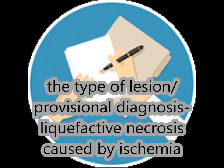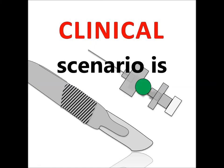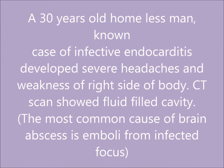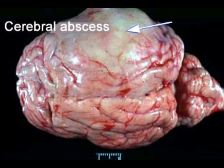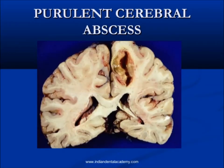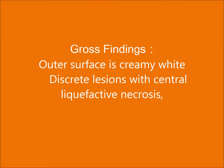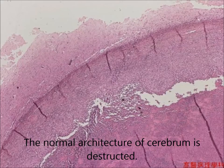Liquefactive necrosis is the loss of normal architecture, and this may also occur in fungal or bacterial infection. A 30-year-old homeless man, known case of infective endocarditis, developed severe headaches and weakness of the right side of the body. CT scan showed a cavity. Here is a cerebral abscess with a creamy white appearance and a cavity lined with a yellow surface. Infective endocarditis is the source of infective emboli, with an outer surface showing a creamy white discrete lesion with central liquefactive necrosis.